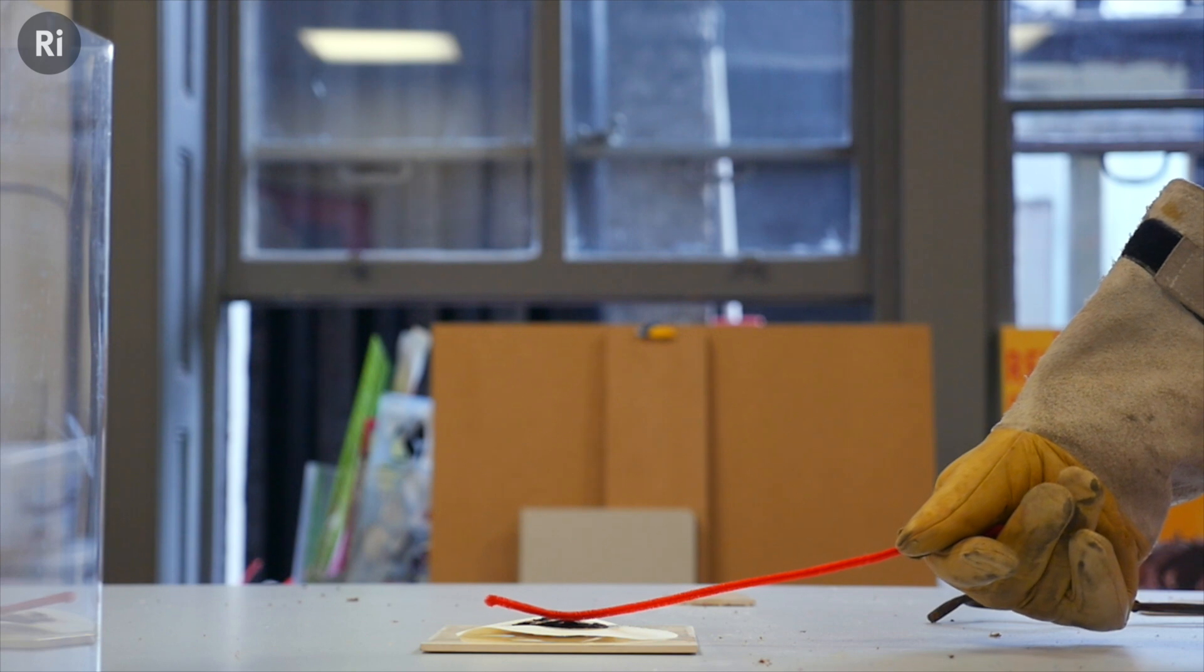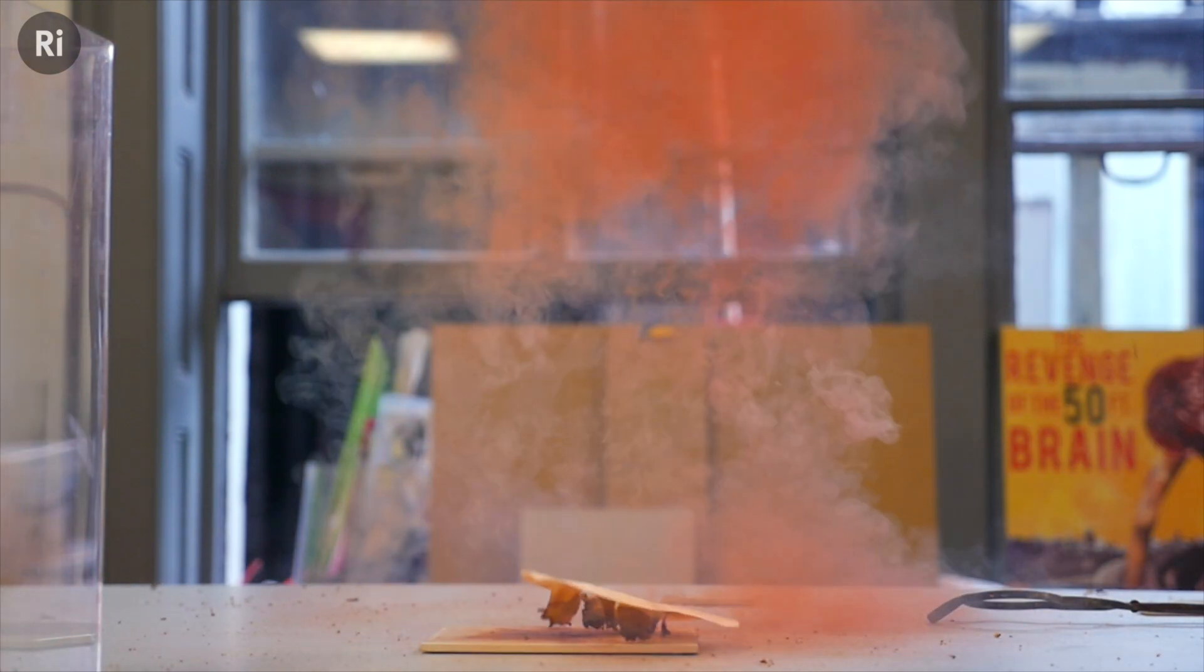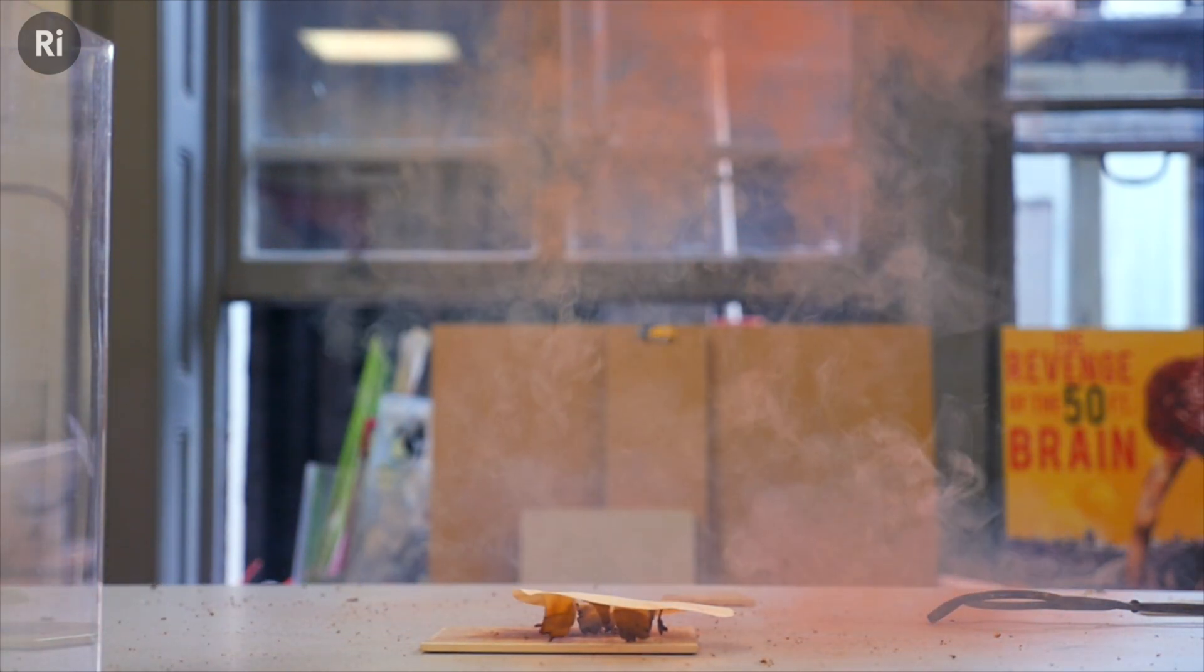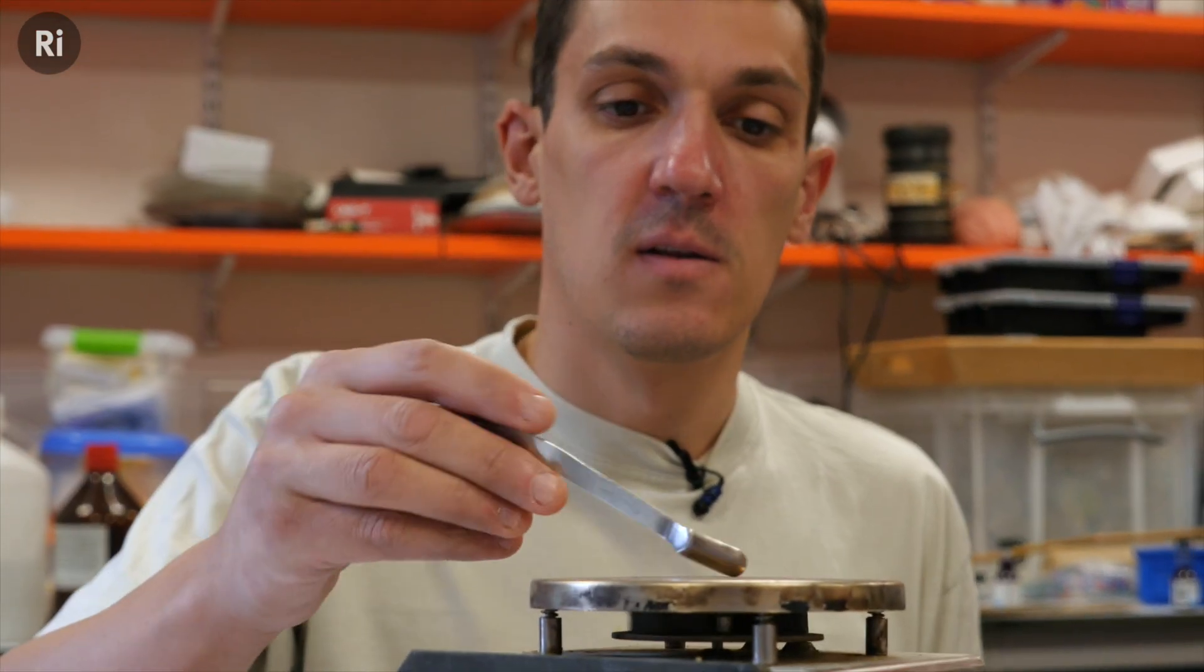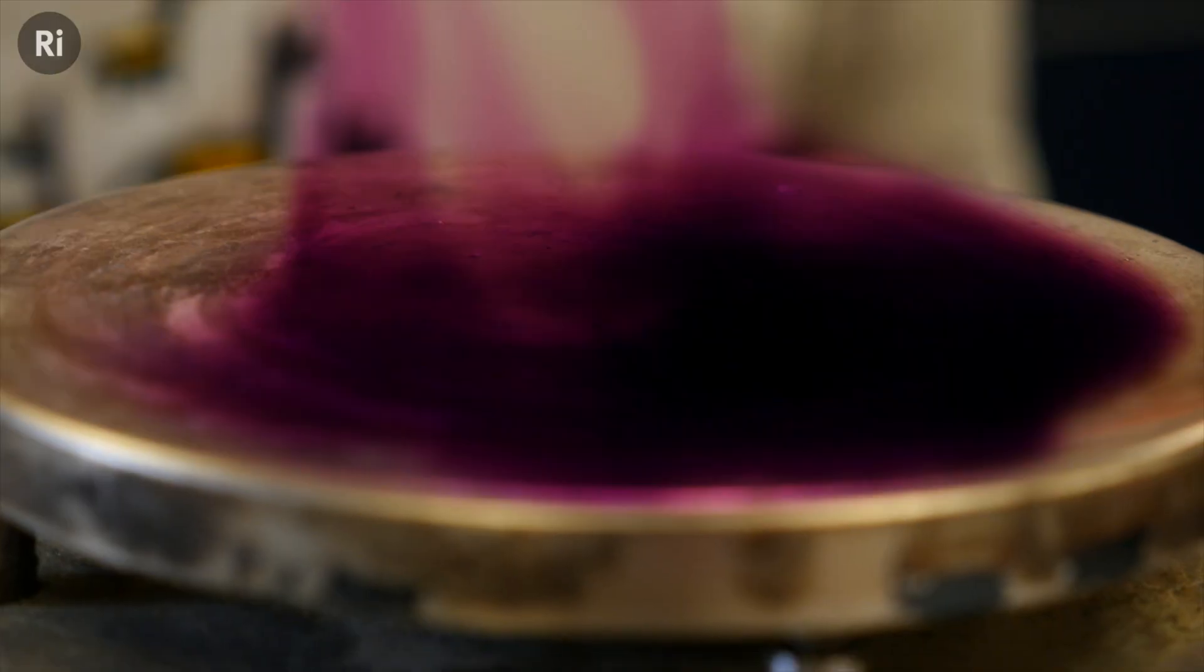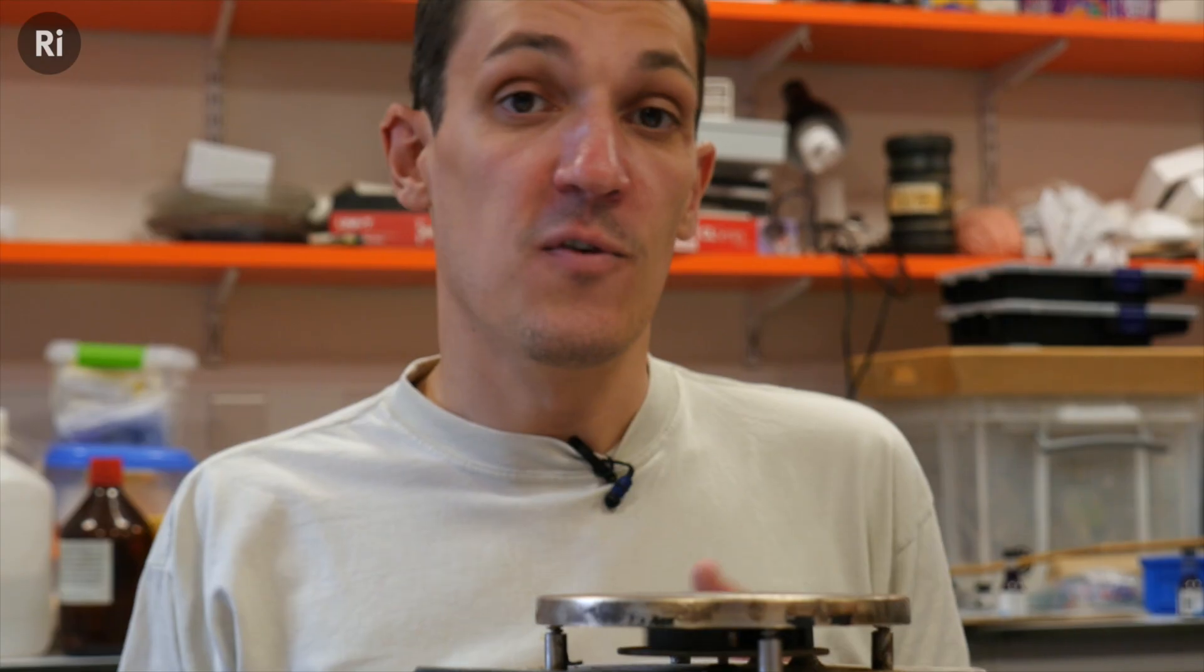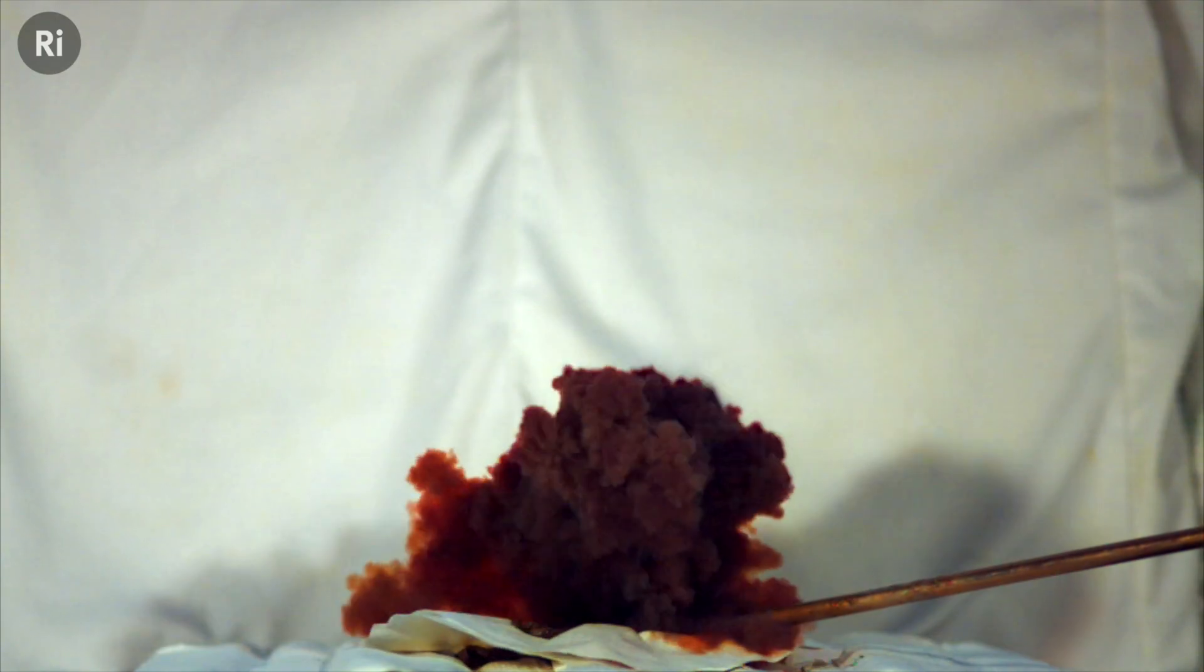One of the characteristic products of this reaction is this beautiful plume of purple iodine gas. And you can see this again if I chuck this tiny piece of solid iodine onto this hot plate. Now this iodine is formed along with nitrogen gas as a result of all those triiodide molecules falling to pieces and recombining into a different arrangement.